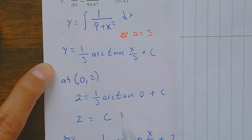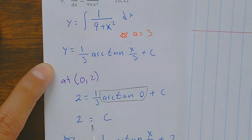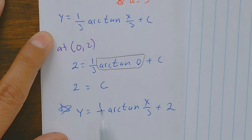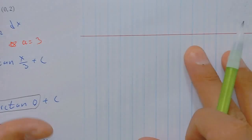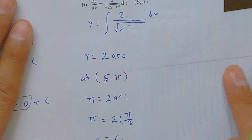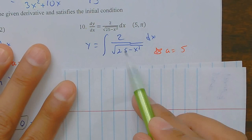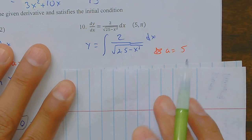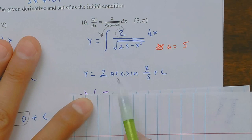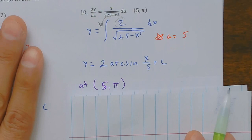Number ten: I recognize this as an arc tangent form with a equals 5, so I factor out 2 and write 2 arc tan of u over a, plus constant C. Plugging in the given point (5, pi): substituting x equals 5 gives 5 over 5, and from pre-calc arc tan of 1 is pi over 2. My constant came out to be 0.